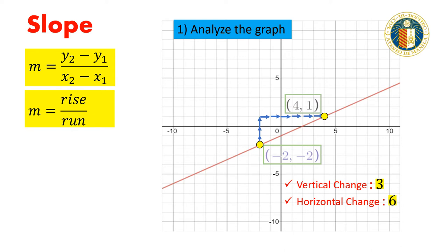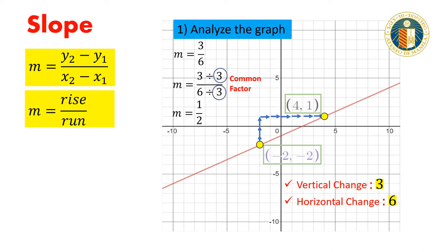Using this information, we can recognize that the ratio of the vertical change to the horizontal change — which would be our slope — is 3 to 6, or 3 over 6. Since both share a common factor of 3, the slope of the line is 1/2.